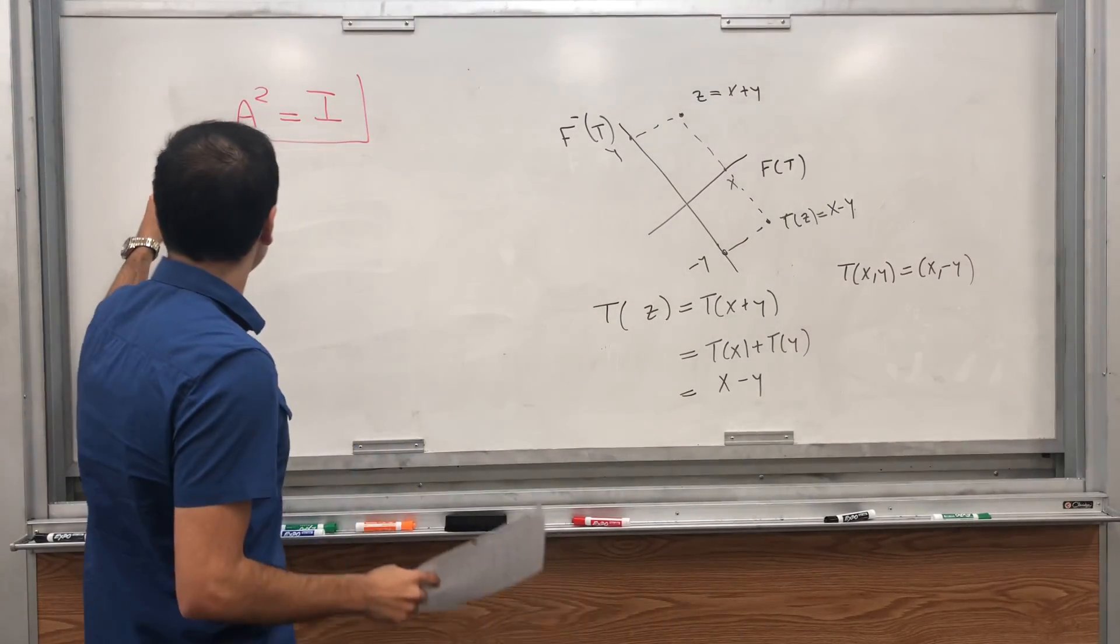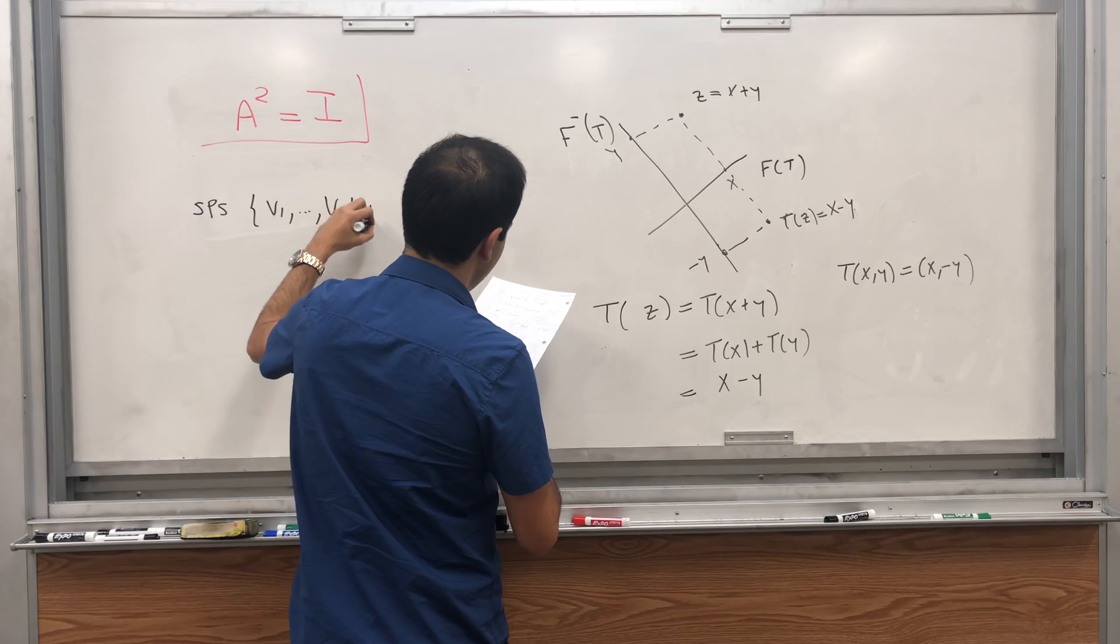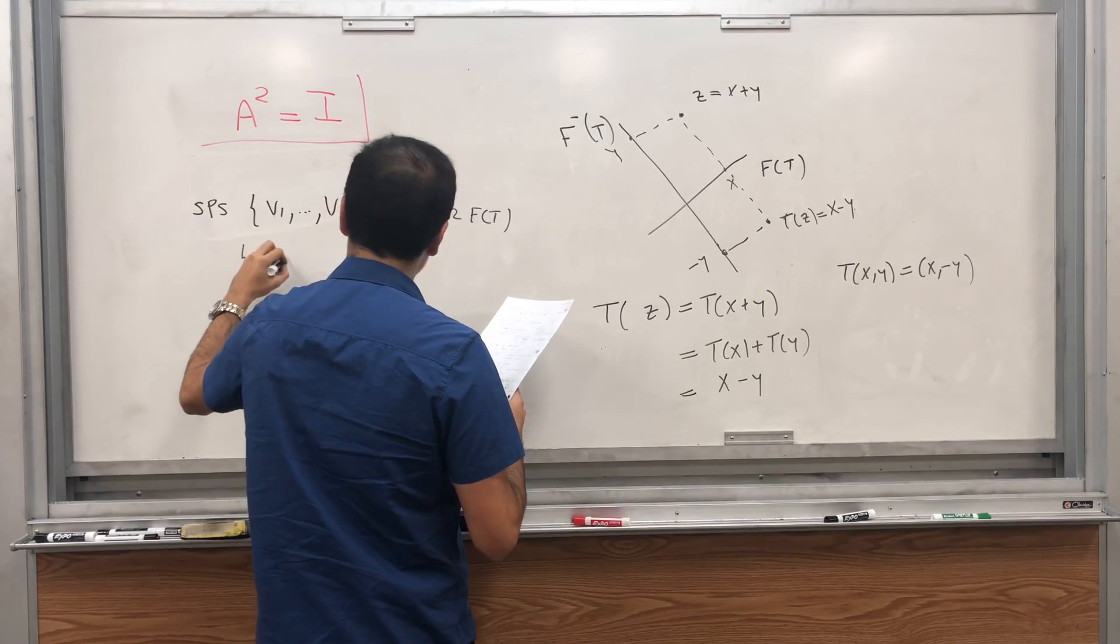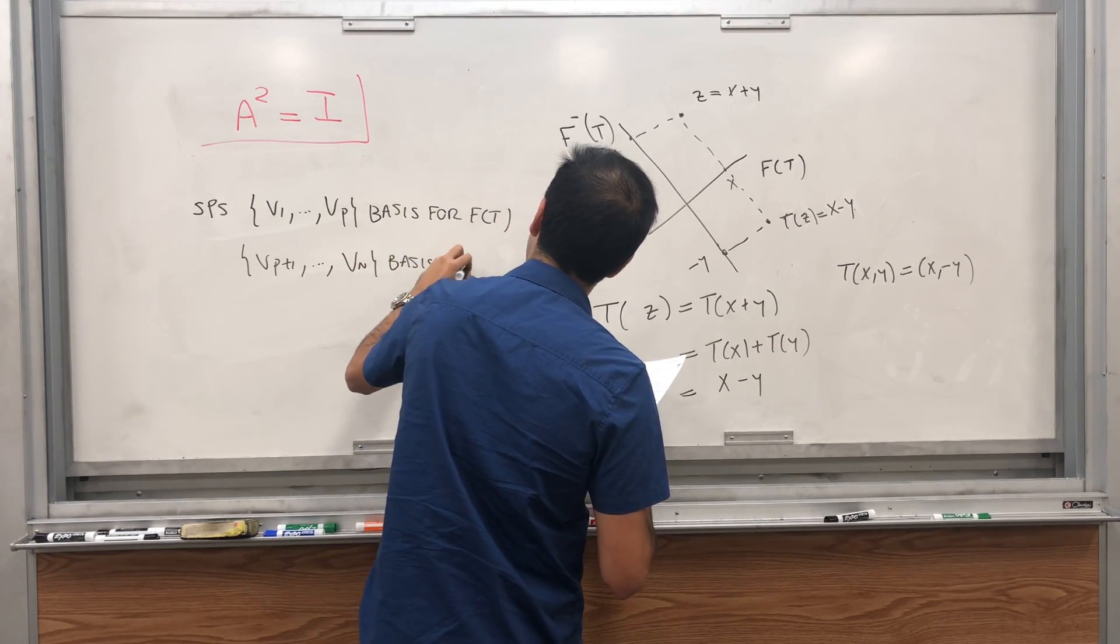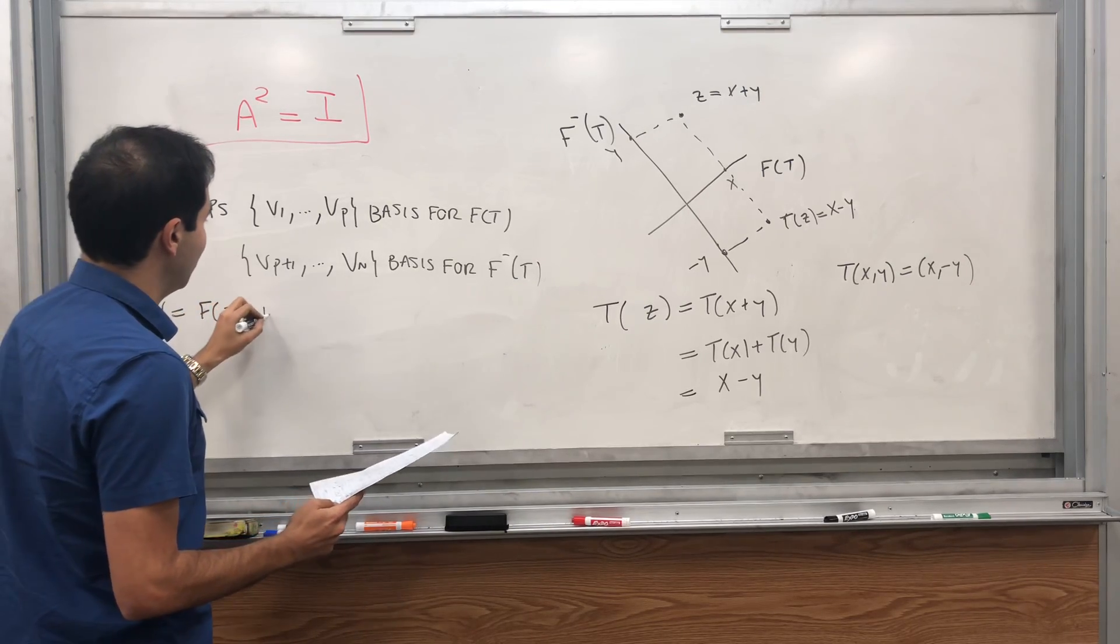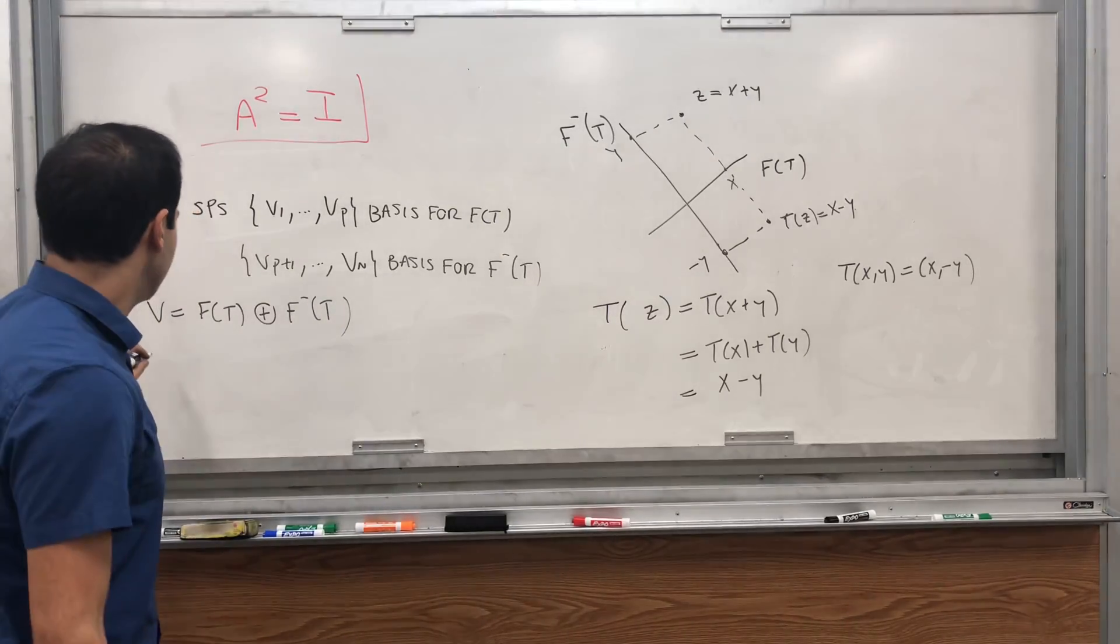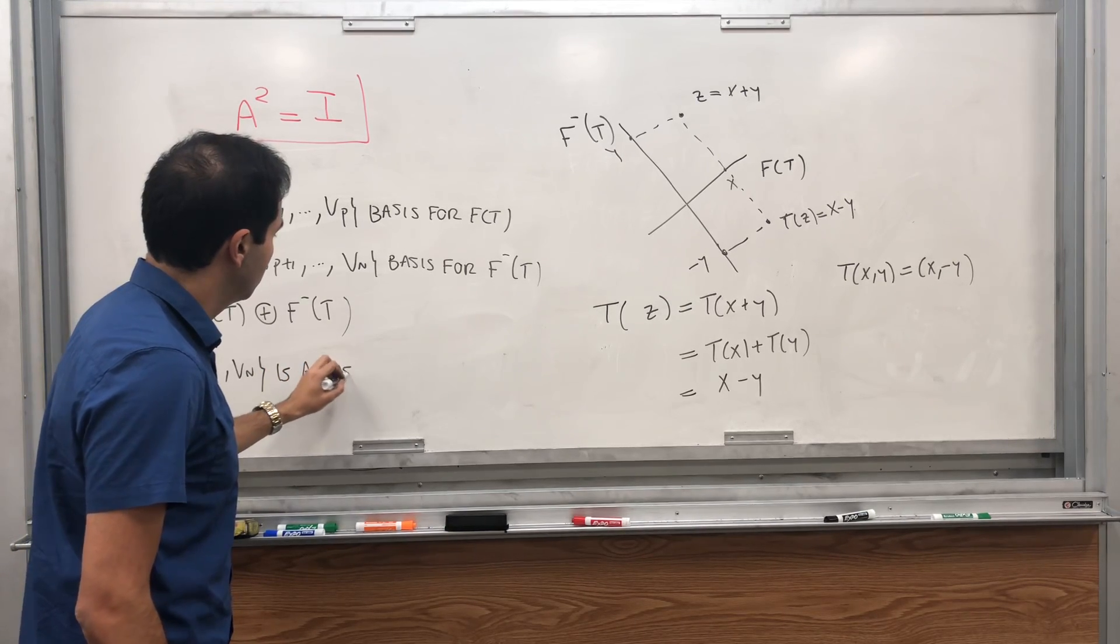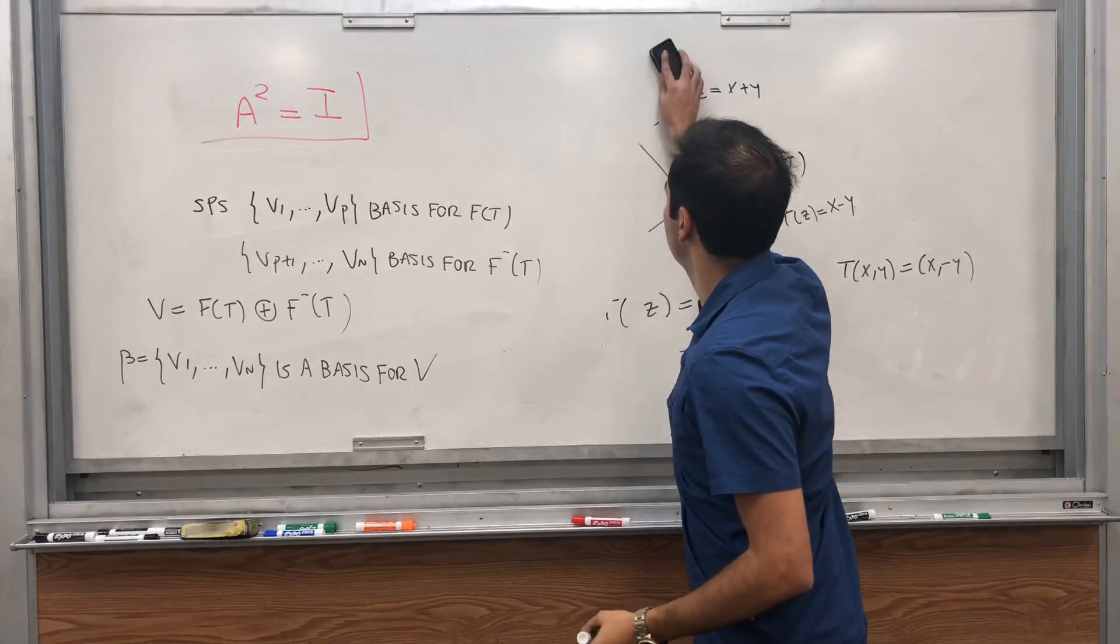This is neat. And I think if you want to do like T to the fourth equals I, that's even more complicated. You may have reflections and you may have rotations and stuff, but this is one of the simple cases that we can characterize completely. Now if you want some matrices, well here they are. So suppose we have V1 up to Vp is a basis for F(T), and Vp+1 up to Vn a basis for the anti-fixed point space F minus of T.